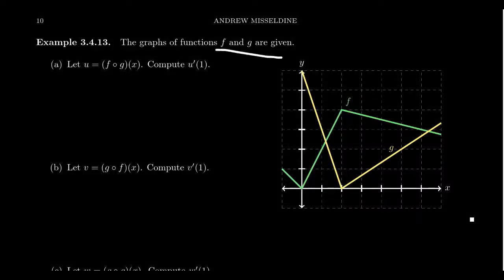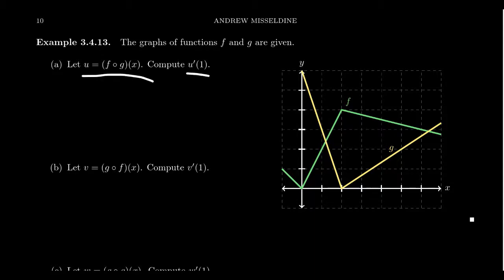The graphs of the functions f and g are illustrated here on the screen. We can see that f and g are both piecewise linear functions. Suppose that u equals f composed with g of x. Can we compute u prime of one? Well, it turns out the chain rule allows us to compute the derivative just from the graphs we see right here.